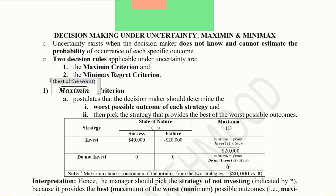In simple words, maximin means the best of the worst — best of the minimum. The procedure is: we extract the worst outcomes from each strategy, then choose the better of the two. This way we are neither underestimating nor overestimating, because we choose the minimum of each strategy and then the maximum of those minima.